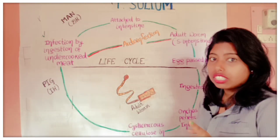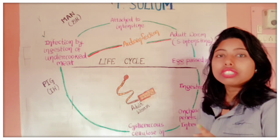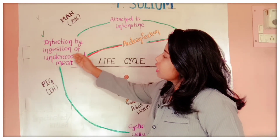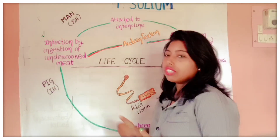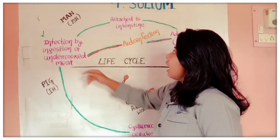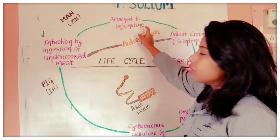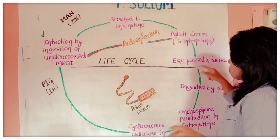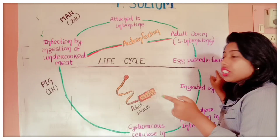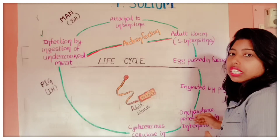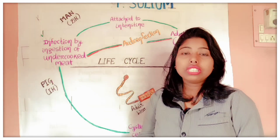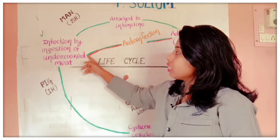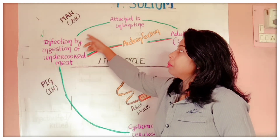But there is also another case called auto-infection, meaning self-infection. When a human is infected by eating undercooked meat, the adult worm is attached to the intestine and lays eggs that pass in the feces. These eggs, instead of being taken by the pig, can also contaminate food and water.